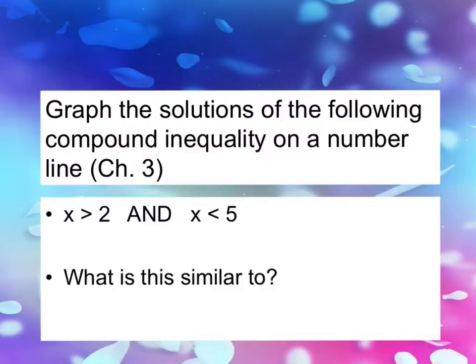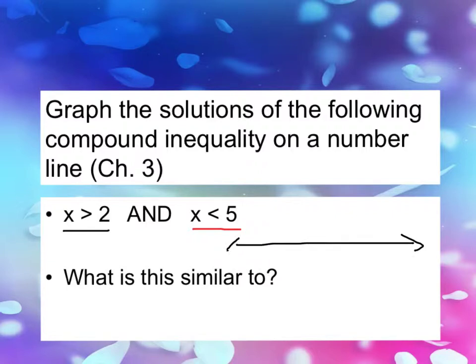Let's review some prior knowledge. In first semester, chapter 3, you learned how to graph the solution of a compound inequality. So let's look at this one: x is greater than 2 and x is less than 5. Since there's only one variable here, we're gonna graph this on a number line and there's gonna be some overlapping.